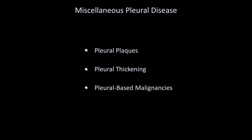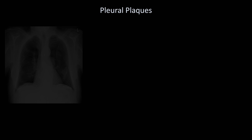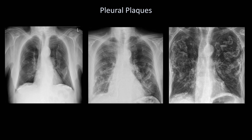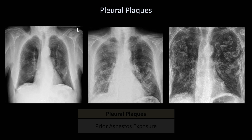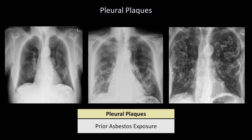Let me move on to some miscellaneous forms of pleural disease, including pleural plaques, pleural thickening, and pleural-based malignancies. These opacities are all examples of pleural plaques. They are typically bilateral, multifocal, and relatively symmetric. Each individual plaque can appear scalloped or shaped like a holly leaf when seen front-on, while those seen edge-on appear more linear. The apices and costophrenic angles are relatively spared. Pleural plaques have the shortest differential diagnosis of any chest x-ray finding, as they are always indicative of prior asbestos exposure. It's important to realize that while pleural plaques and asbestosis can coexist, they are not synonymous — asbestosis is a parenchymal lung disease, not a disease of the pleura.